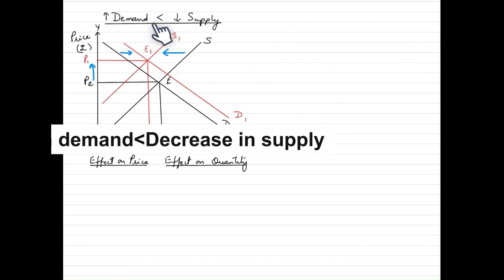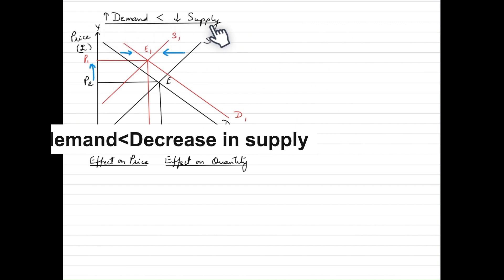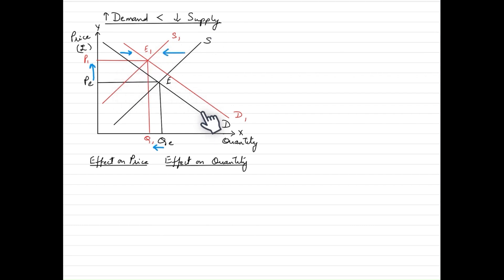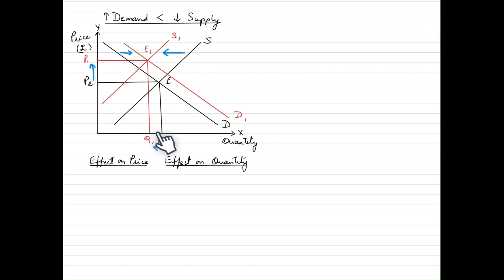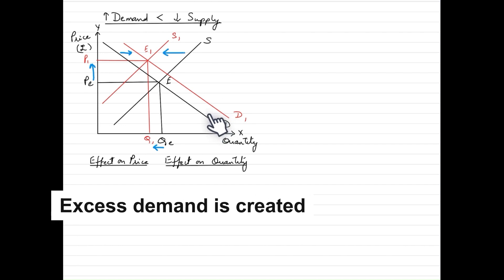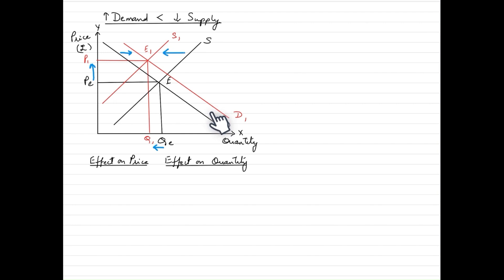This is the case where the increase in demand is smaller than the decrease in supply. You would see the demand curve shifting to the right by a smaller amount compared to the supply curve shifting to the left. The equilibrium price would again rise and the quantity would fall. There's a substantial decrease in supply compared to the increase in demand, which leads to a shortage scenario in the market — and any shortage scenario puts an upward pressure on prices.